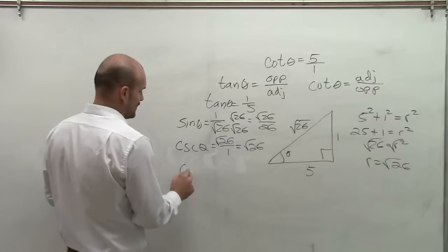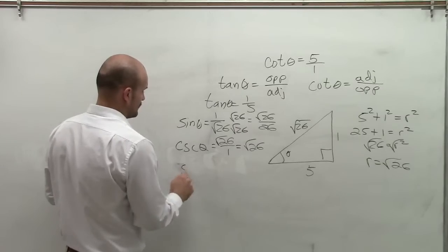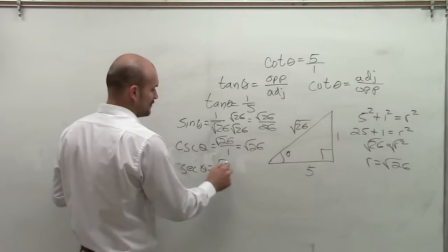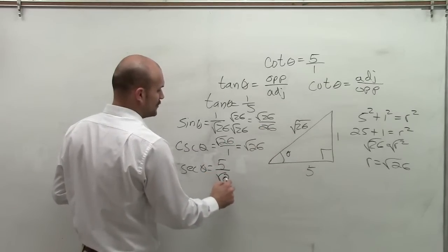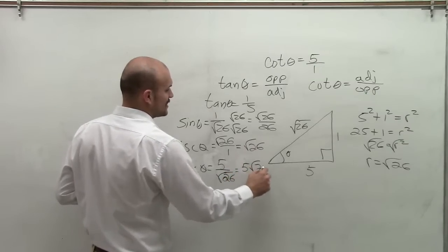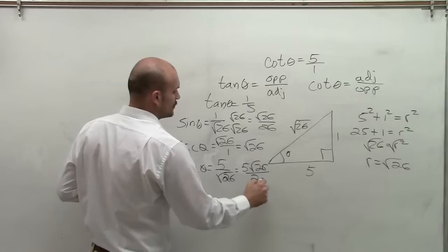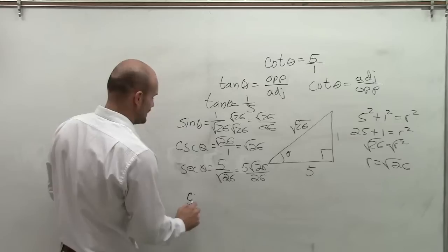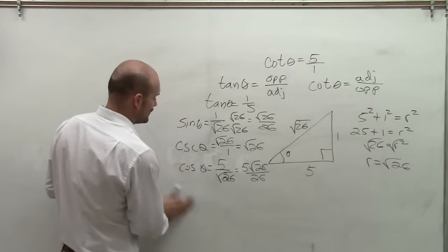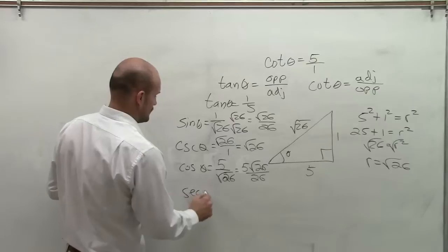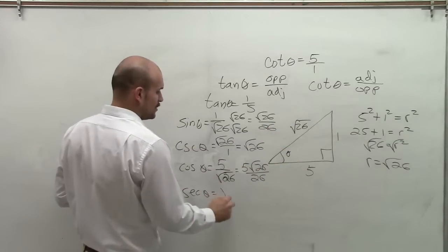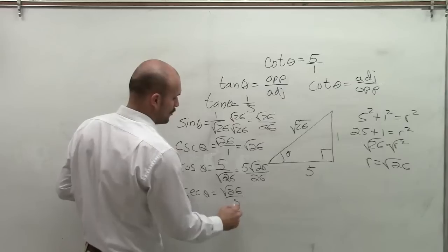Therefore, if I now find the secant of theta, secant of theta is going to be adjacent over hypotenuse, 5 over square root of 26. Rationalize the denominator, and I get 5 times square root of 26 over 26. And therefore, the secant of theta is going to be the hypotenuse over my adjacent, which will be square root of 26 over 5.